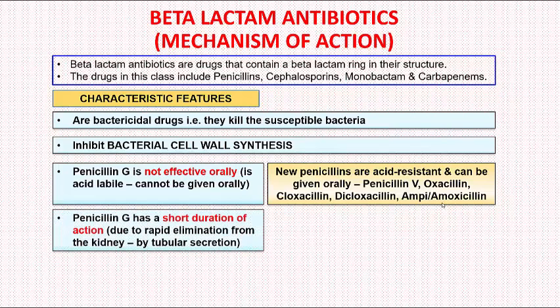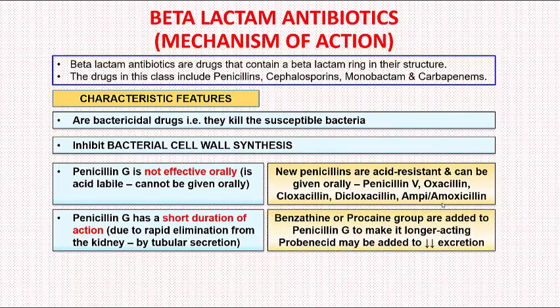Second, penicillin G has a short duration of action due to rapid elimination from the kidney by tubular secretion. Benzathine or procaine groups are added to penicillin G to make it longer-acting. Another way of prolonging the duration of action is by giving probenecid along with penicillin, which inhibits tubular secretion of penicillin and increases its duration of action.